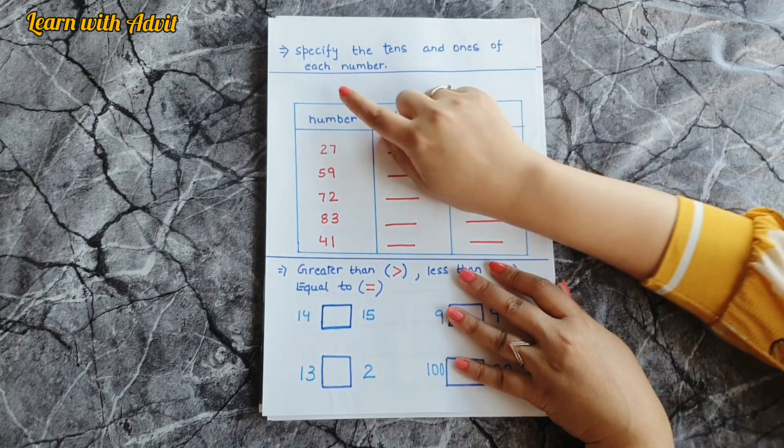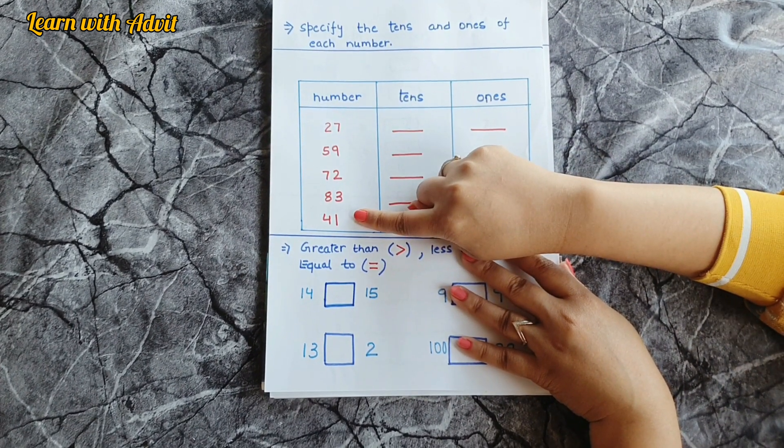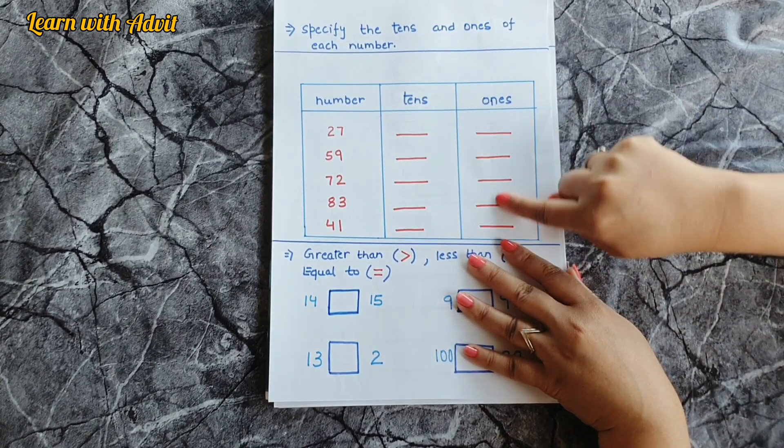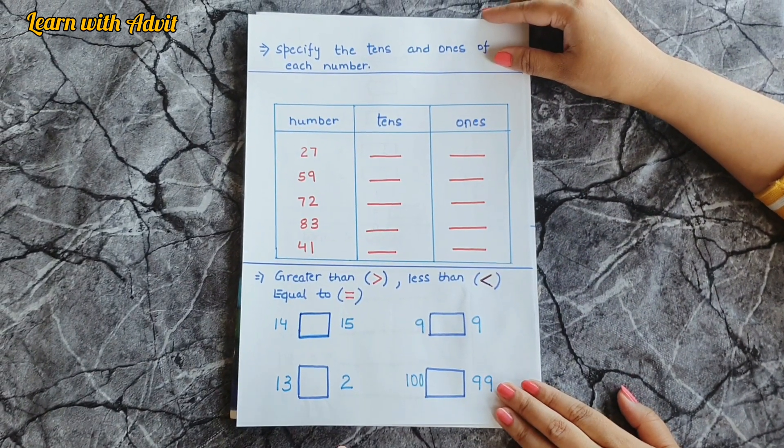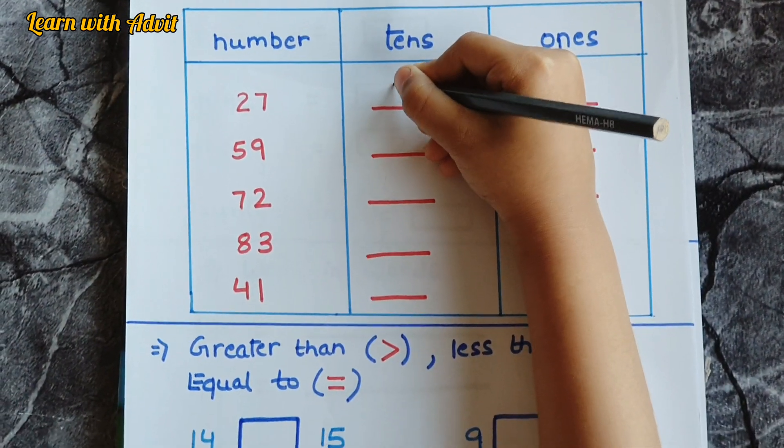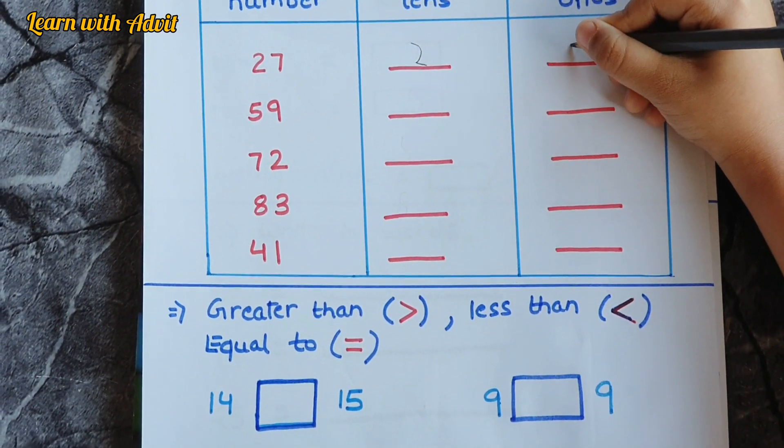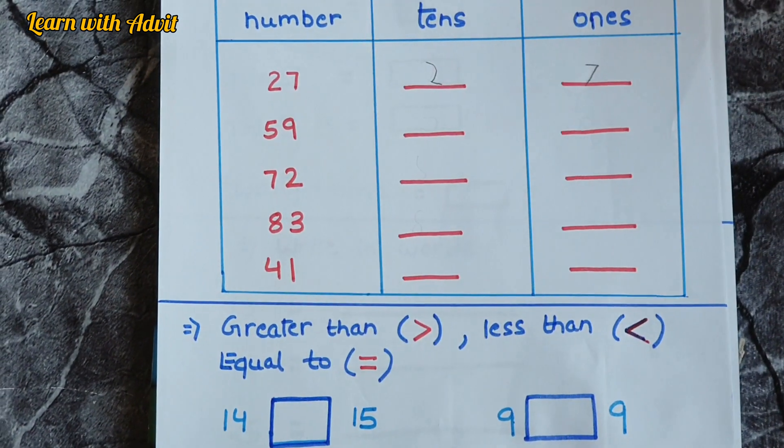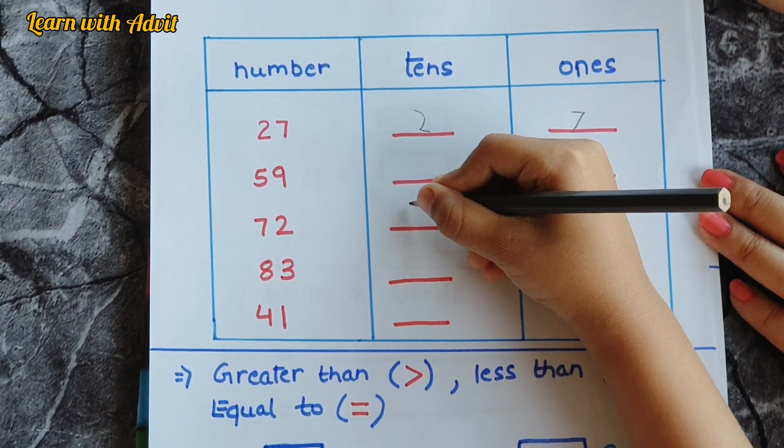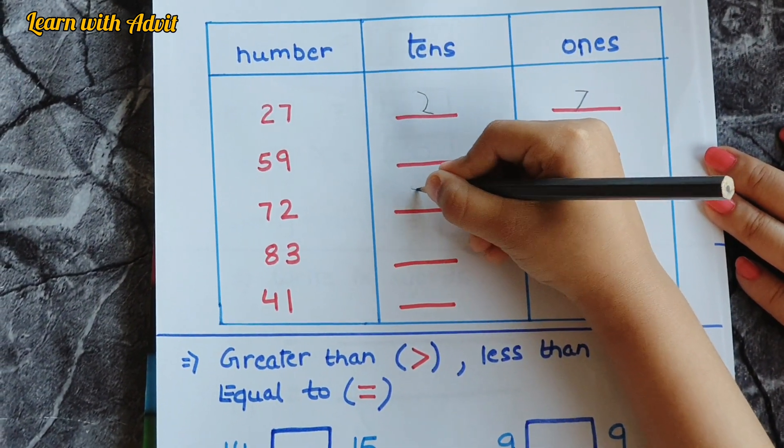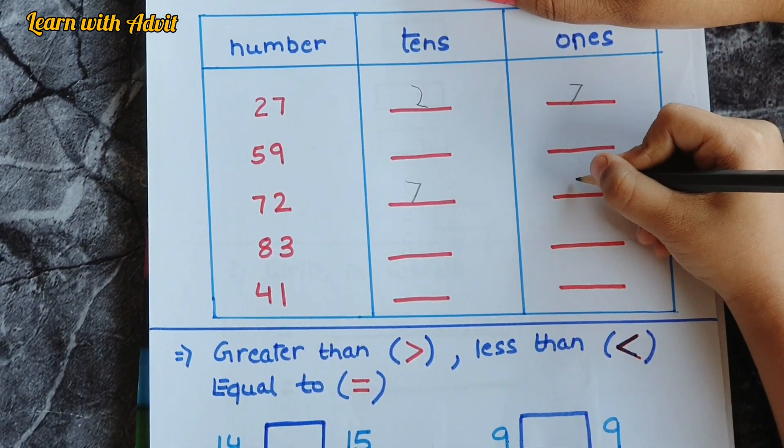In this sheet, what do you have to do? Specify the tens and ones of each number. I have written some numbers, so you have to write tens here and ones here. Come on, do. For twenty-seven, write. Two has to be in tens place. And seven, ones place. Very good. For seventy-two, write. Seven has to be in tens place. Very good. And the two has to be in ones place.